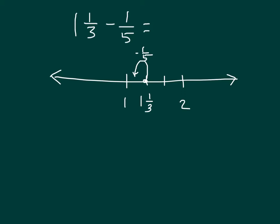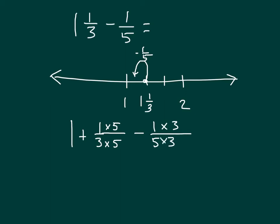We know to make like units. Working with 1 and 1 third minus 1 fifth, we keep our 1 and break the fraction part into 1 plus 1 third, and we are subtracting 1 fifth. To make like units, we multiply the third by 5 to get 15ths, and multiply 1 fifth by 3 to also get 15ths. So this becomes 1 plus 5 fifteenths minus 3 fifteenths, which gives us 1 plus 2 fifteenths, equaling 1 and 2 fifteenths.